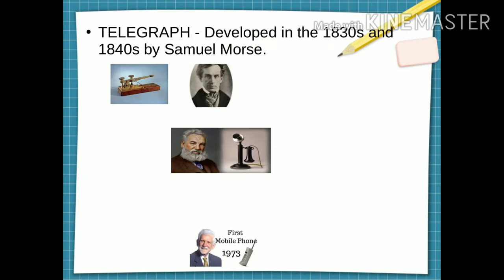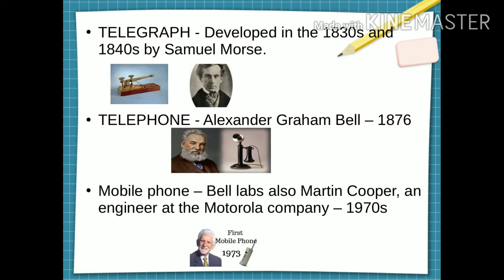Other things in the timeline are telegraph developed in the 1830s and 1840s by Samuel Morse, using Morse code for communication. Then telephone Alexander Graham Bell in 1876. And mobile phone by Bell Labs. Also, another person, Martin Cooper, an engineer at Motorola company in 1970s.